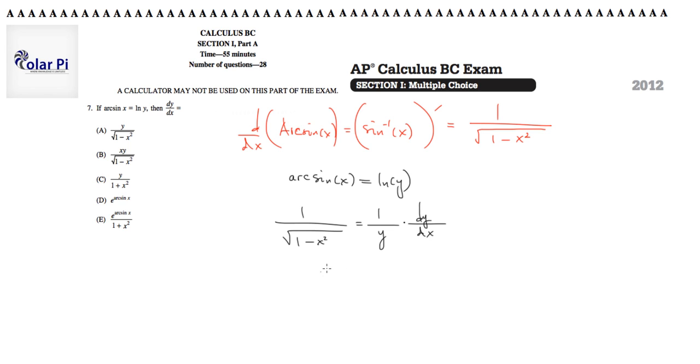So then, solving for dy dx, because that's what we're asked for, we get that dy dx will have to equal y times 1 over square root of 1 minus x squared, which is y over root of 1 minus x squared.